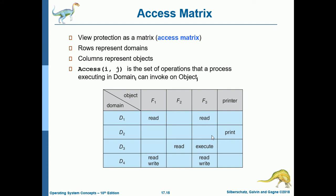Next is the access matrix. Protection is viewed as a matrix — the access matrix — where rows represent domains (D1, D2, D3, D4) and columns represent objects (F1, F2, F3, Printer). Access[i,j] is the set of operations that a process executing in domain D_i can invoke on object O_j. For example, domain D1 can read F1 and F3, but has no access to F2 or Printer. Domain D2 can only use the printer to print, with no access to F1, F2, or F3.